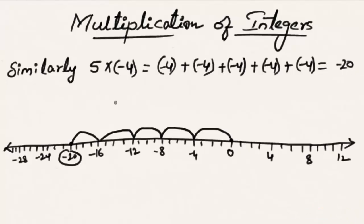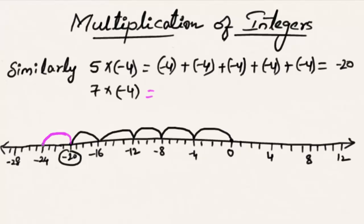Similarly, what would be 7 times minus 4? That is 2 more jumps from minus 20 — first we reach minus 24, then minus 28. Hence, 7 multiplied by minus 4 is minus 28.